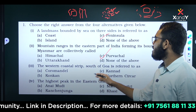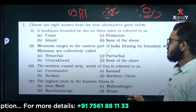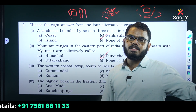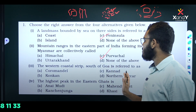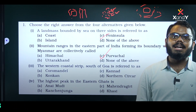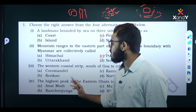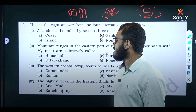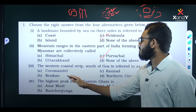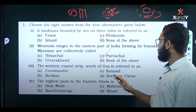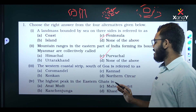The western coastal strip south of Goa is referred to as? What is the name of the western coastal strip? Option A — Coromandel, Option B — Konkan, Option C — Purwajal, Option D — Northern Sircar.